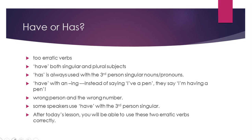These verbs offer problems because they are too erratic or unruly. 'Have' is both a singular verb and also a plural verb. We use 'have' with 'I', which is singular, and also with 'we' and 'they', which are plural, so it's very difficult to categorize. But 'has' is easier because we can use it only with the third person singular in the present tense. Another mistake people make is adding -ing to the verb 'have' — instead of saying 'I have a pen,' many say 'I'm having a pen.' And many make the mistake of saying 'she have,' because since 'she' is singular they assume 'have' applies, but that is wrong.